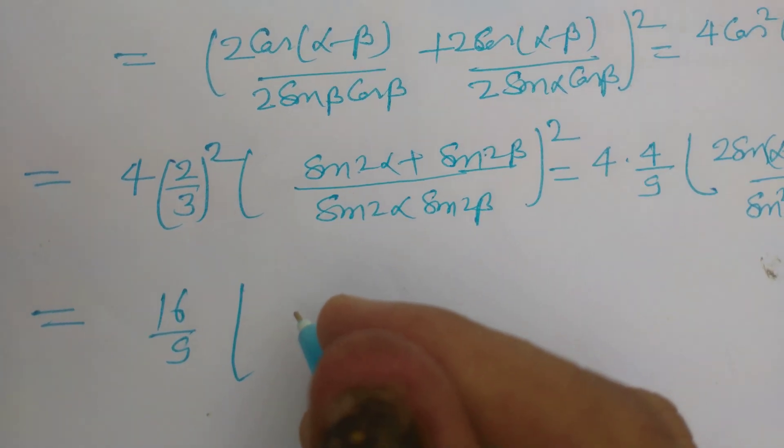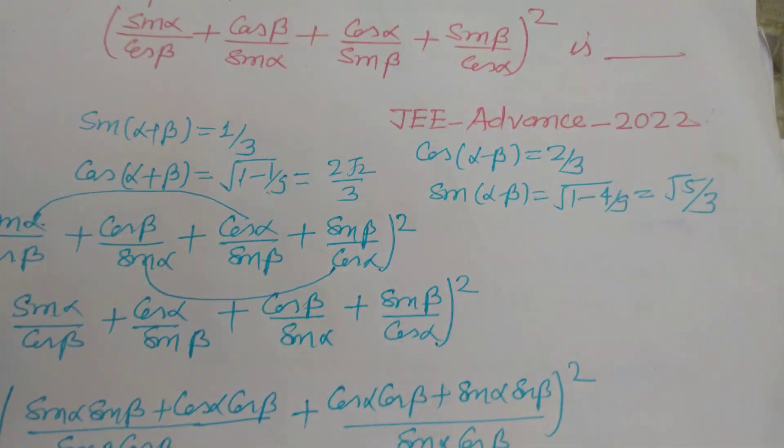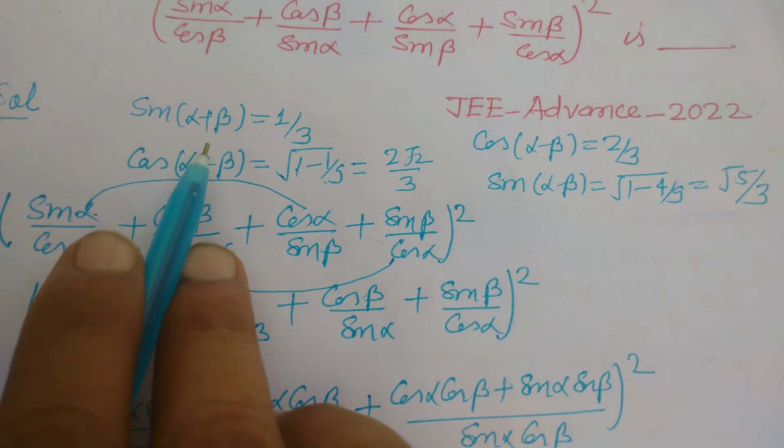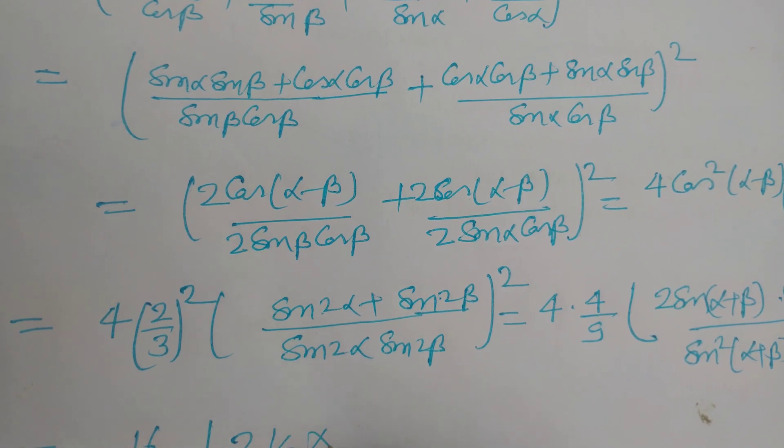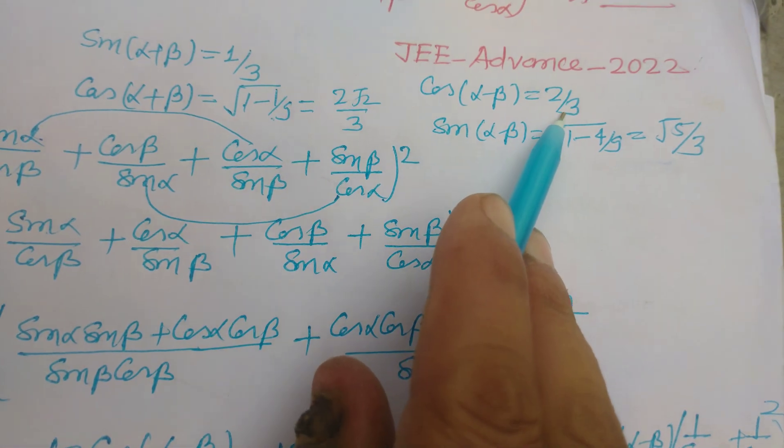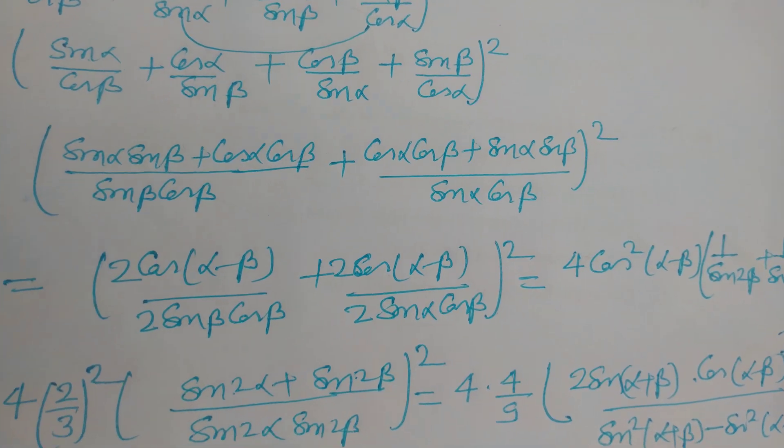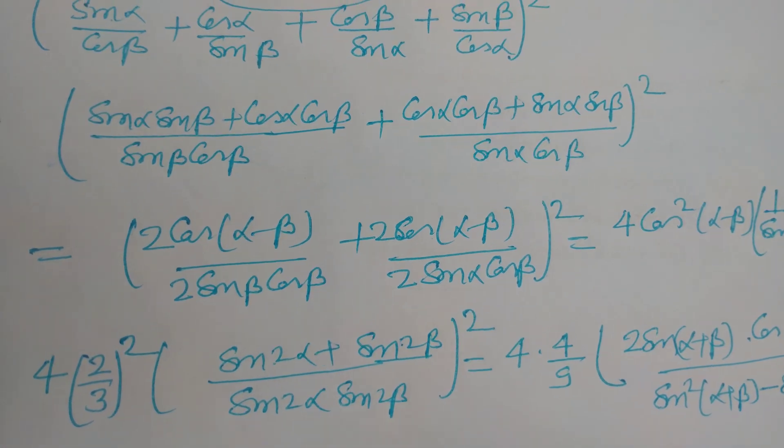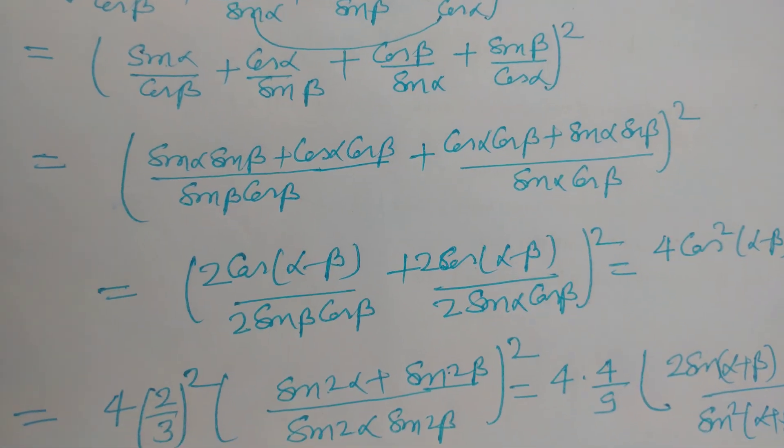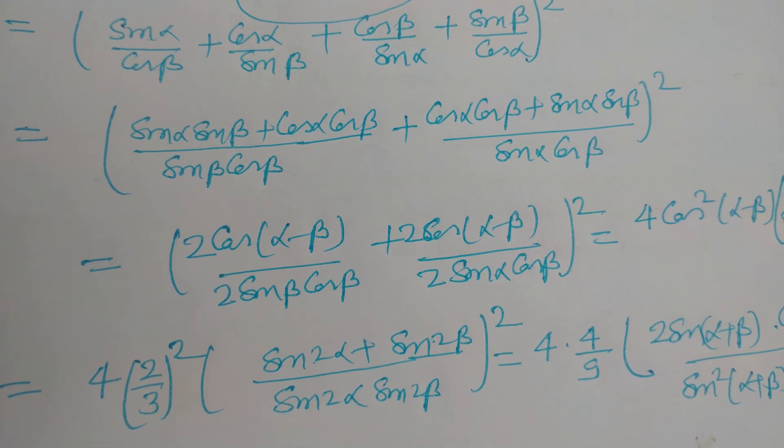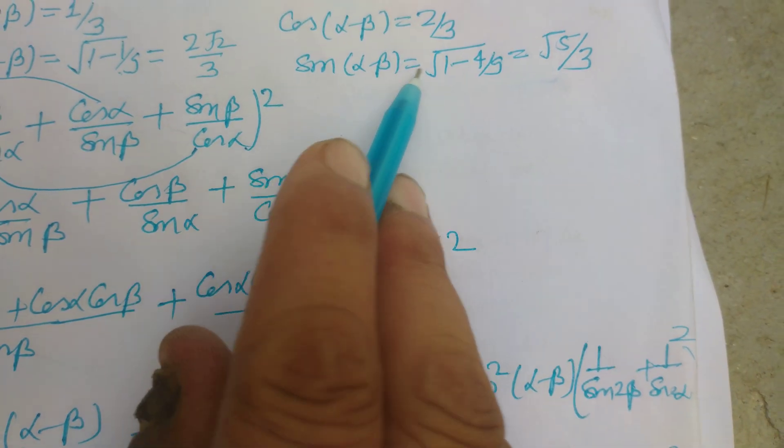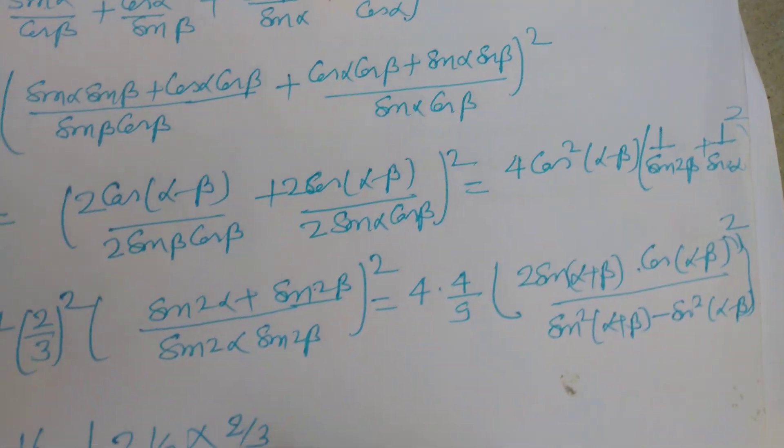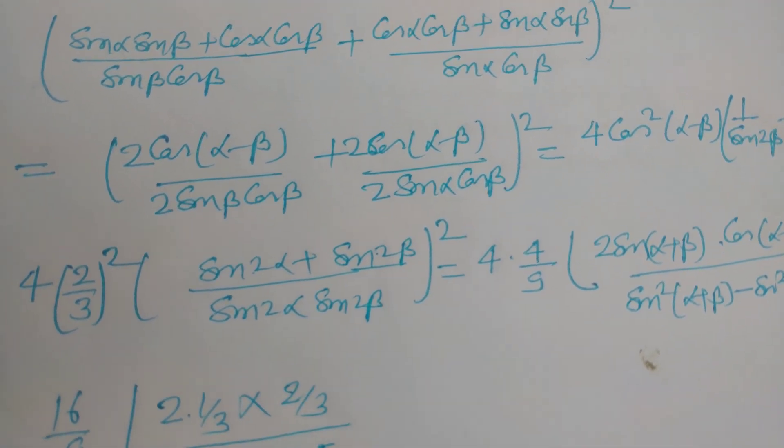Now here we put 16/9. So 2 sin(α+β), we got value of α+β as 1/3. So 2 × 1/3 into cos(α-β). cos(α-β) is 2/3, so 2/3 over sin²(α+β), and sin²(α+β) is 1/3. So whole square of 1/3 minus sin²(α-β), sin is √5/3. So this becomes 5/9.